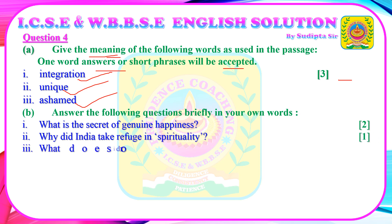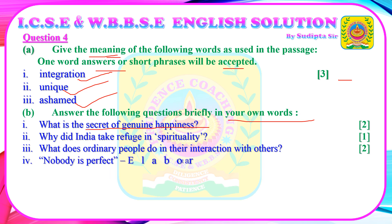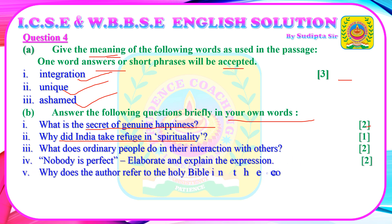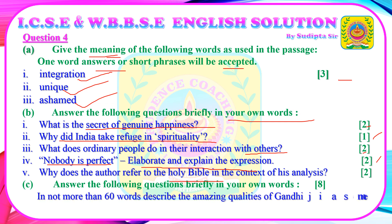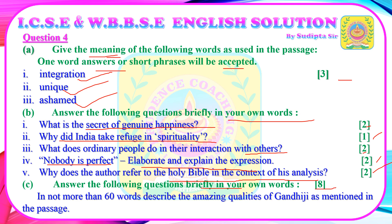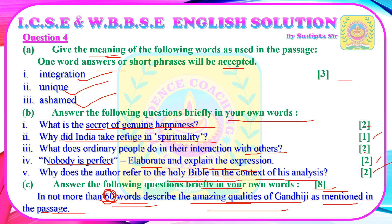Question B: Answer the following questions briefly in your own words. 1) What is the secret of genuine happiness? (2 marks) 2) Why did India take refuge in spirituality? (1 mark) 3) What do ordinary people do in their interaction with others? (2 marks) 4) Elaborate and explain the expression "Nobody is perfect." (2 marks) 5) Why does the author refer to the Holy Bible in the context of his analysis? (2 marks). Question C: Write a summary of the passage in not more than 60 words, describing the amazing qualities of Gandhiji as mentioned in the passage (8 marks). Maintain the word limit carefully, as crossing it may result in mark deductions.